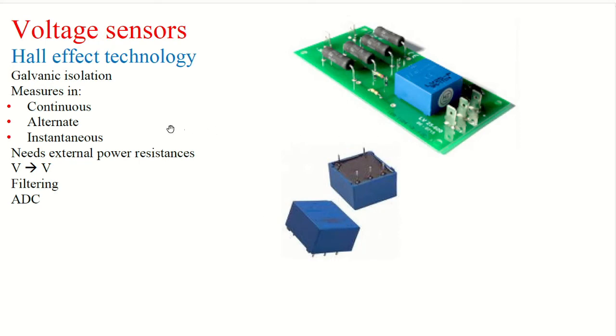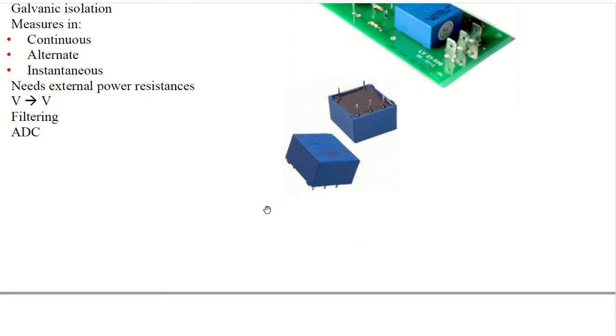And then you have also the isolation between the primary circuit and the secondary circuit. And it goes up to between two and 20 kilohertz for the signal.